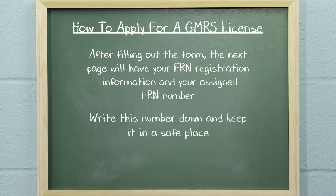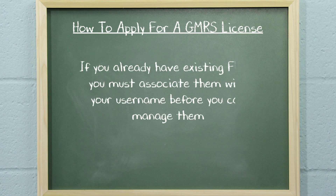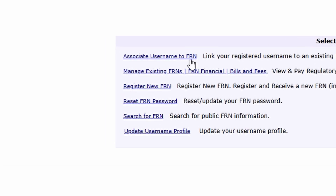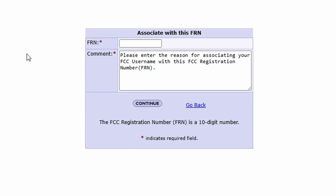Write this number down and keep it in a safe place. If you already have existing FRNs, you must associate them with your username before you can manage them. To do this, go back to the User Homepage, click on Associate Username to FRN, and fill out the form.